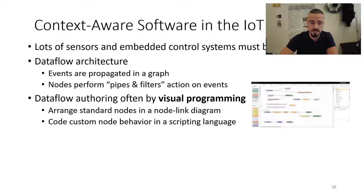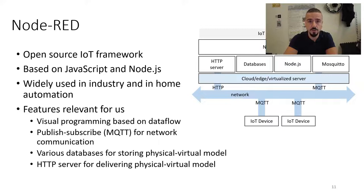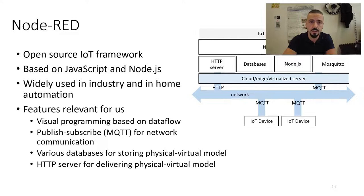We can also create nodes that hold custom code. Node-RED is an open-source framework based on JavaScript and Node.js. It allows the connection of a hierarchy of different sources like databases, APIs, and whatever the IoT and web world offers. For communication, we use a publish-subscribe framework called MQTT, which allows loose coupling of any sort of clients.